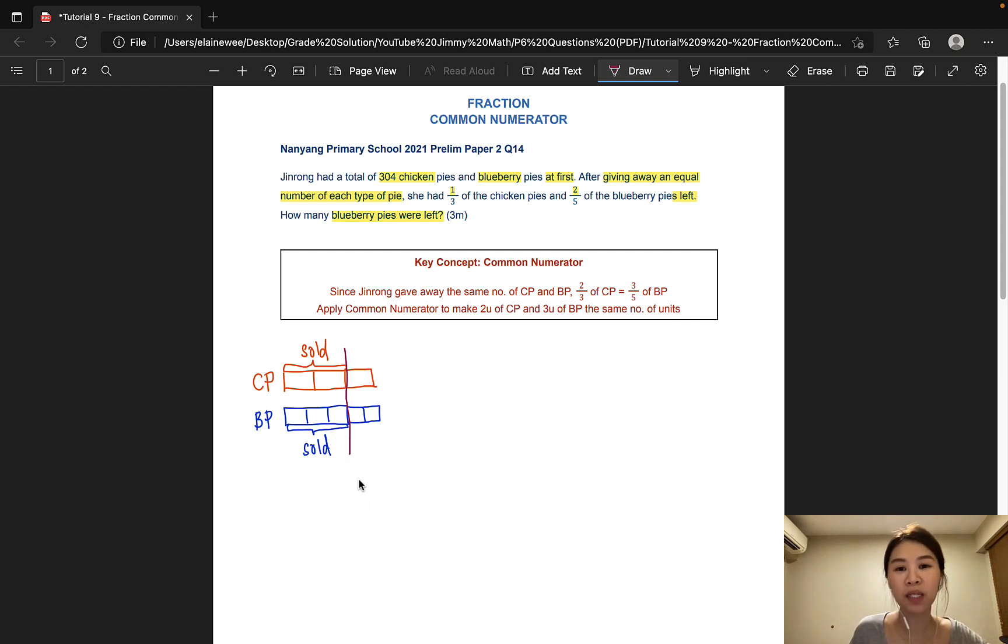So essentially we are looking at just this part of the fractions because the units here and here should be the same. So what we'll typically do in a model is that we will find the lowest common multiple and split the model up such that we have the same number of units here and here. Between two and three, it is very easy to split them up into six units each.